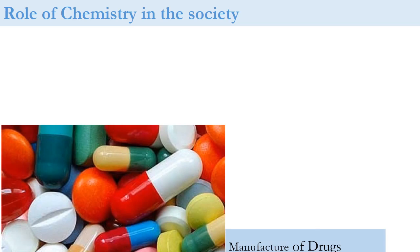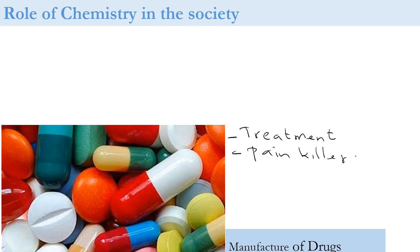First, chemistry is very important in the manufacture of drugs. Drugs can be used for various purposes such as treatment of diseases. When you're sick or feeling pain, you will go and buy some painkillers. This picture shows a mixture of many drugs. Without chemistry, we would not have all these drugs to help us when we get sick.